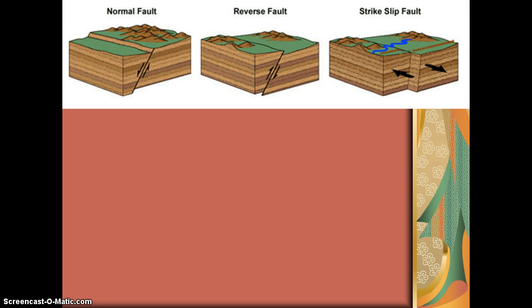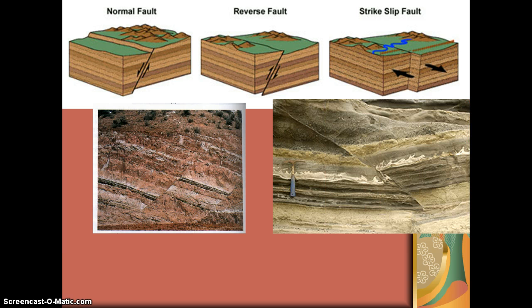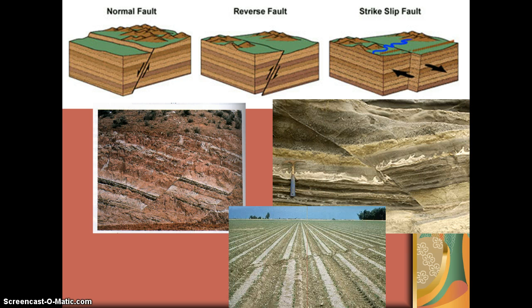Here are some diagrams of our different types of faults that we can observe in the crust. These are actual places on Earth where these particular types of faults occur. We can see this depending on where the hanging wall has moved relative to the foot wall for normal and reverse. And strike-slip is fairly easy, because it's a side-to-side motion.